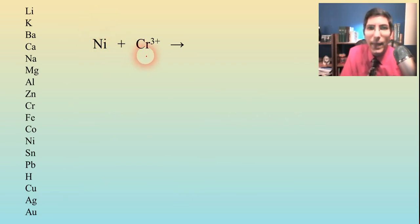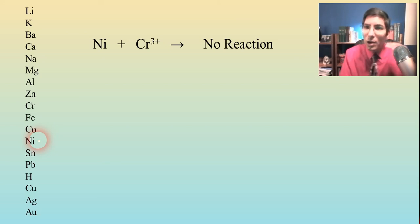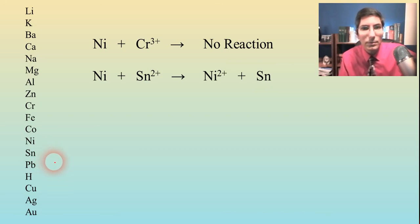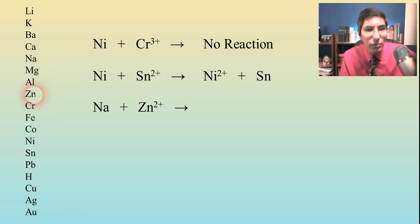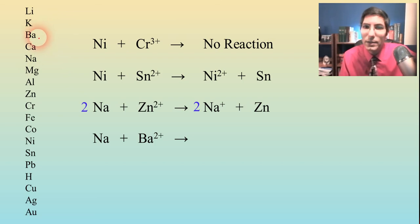For example: nickel added to chromium(III) — nickel is on the chart and chromium is above it, so that's a no reaction. Nickel with tin(II) — tin is underneath nickel, so that works, producing nickel ions and tin metal. Sodium with zinc(II) ions — zinc is underneath sodium, so we get sodium ions and zinc metal. Sodium metal with barium ions — barium is too high on the series, so that's a no reaction.